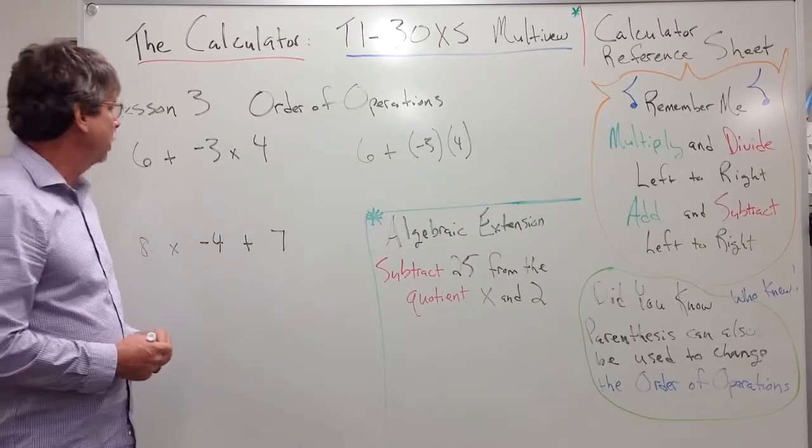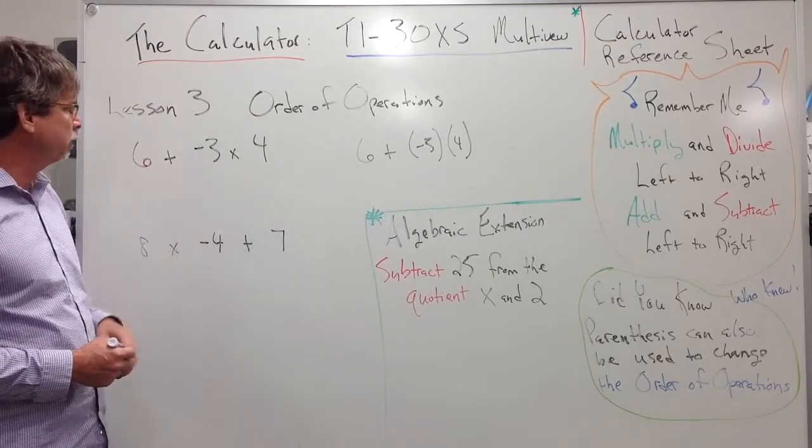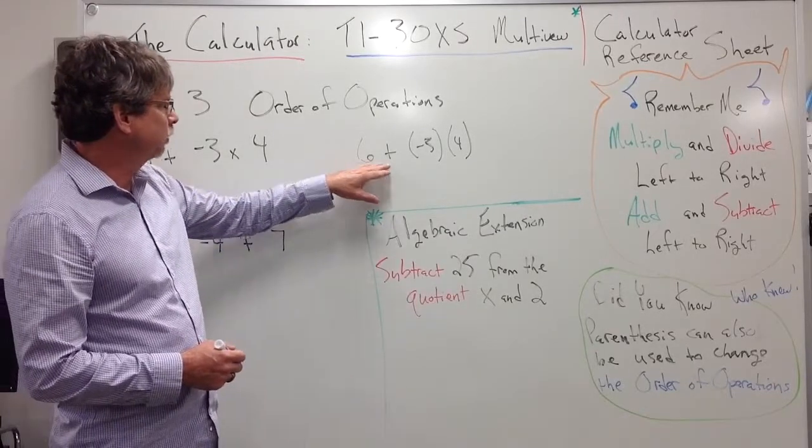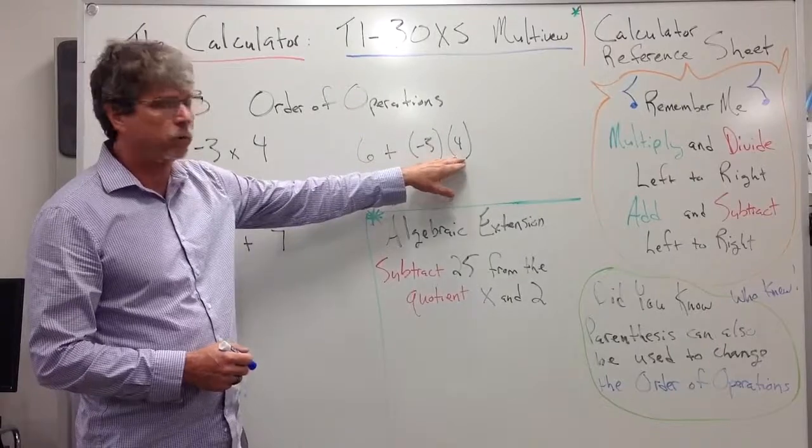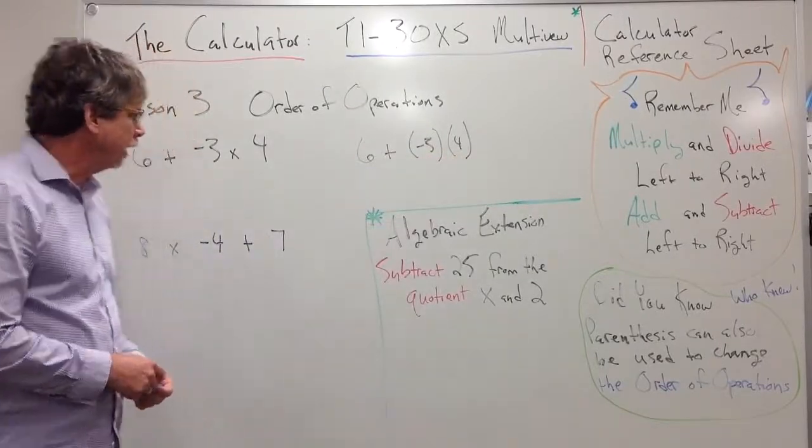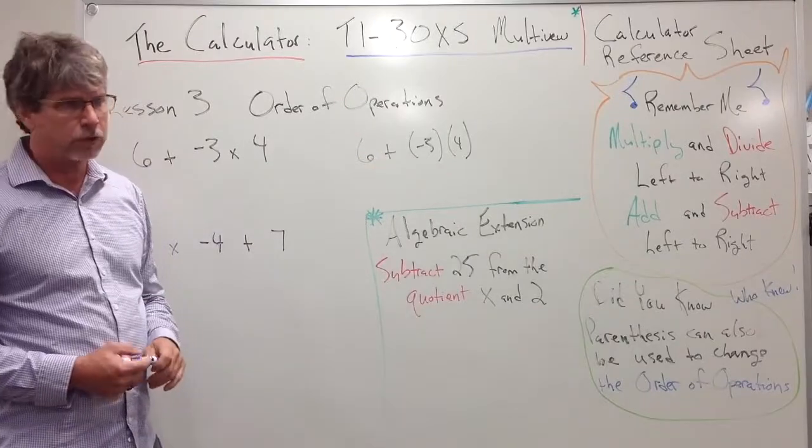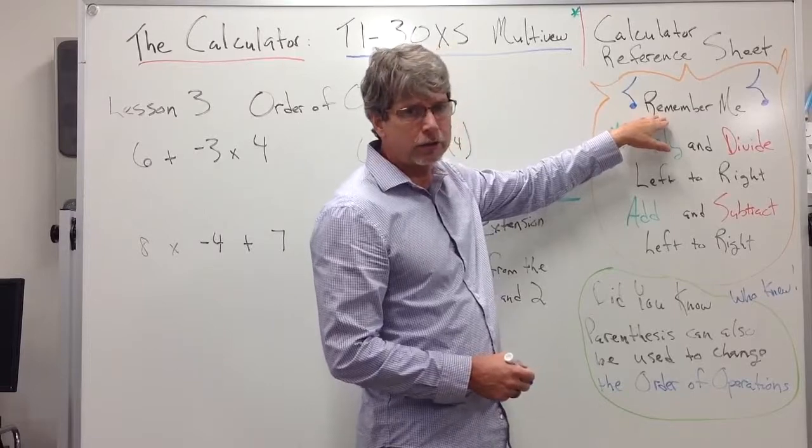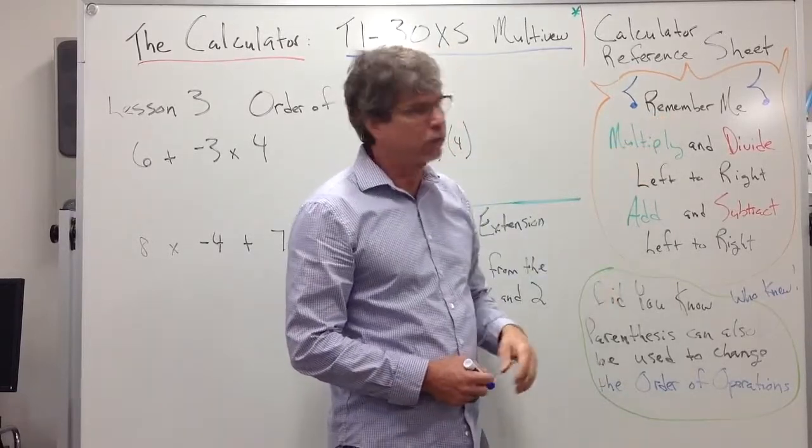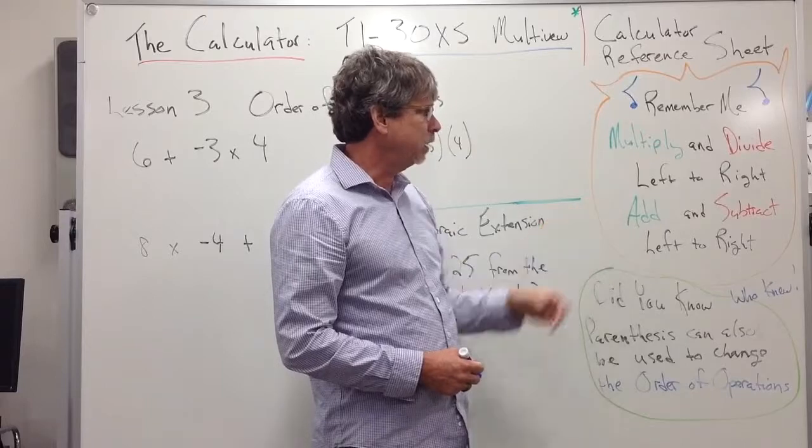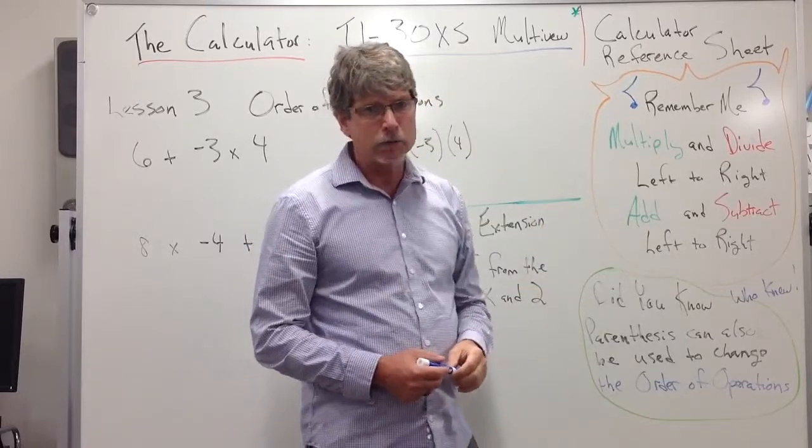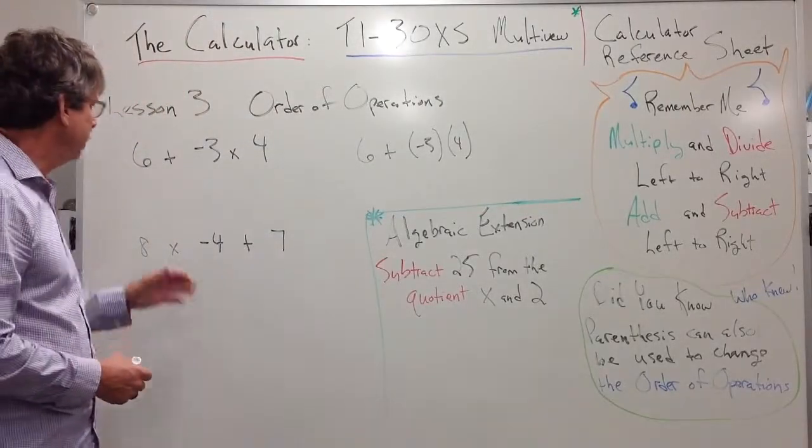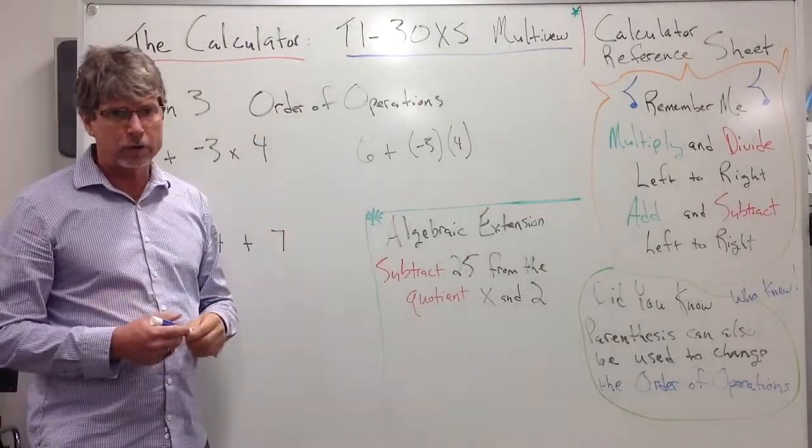Let's look at an example here. I have 6 + (-3) × 4. Notice also I wrote it as 6 + (-3) × 4 using parentheses. Remember, in the order of operations, we need to be multiplying and dividing from left to right, and then we go about adding and subtracting from left to right.